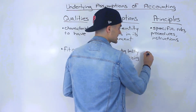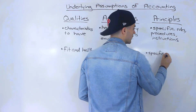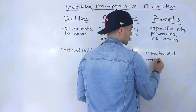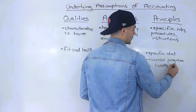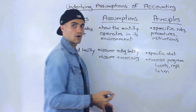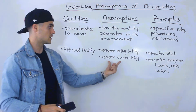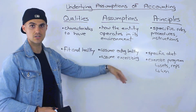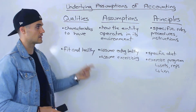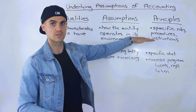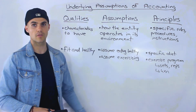The principles would be the specific rules they're following in order to be fit and healthy — like a specific diet, what foods they're eating, what kind of exercise program they're going through, how many sets and reps if they're weightlifting, or how many kilometers if they're running or swimming. So quality: they want to be fit and healthy. Assumptions: eating healthy, exercising, sleeping well. Principles: the specific rules, procedures, and instructions — the specific actions they're taking in order to be fit and healthy.